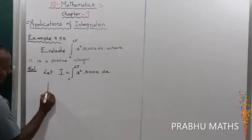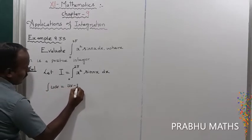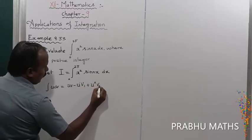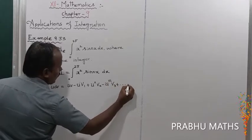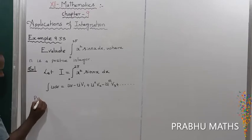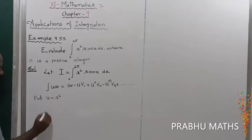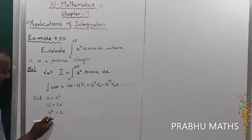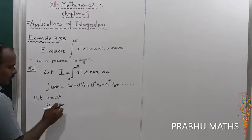By using Bernoulli's formula, we know that ∫U dv = uv − u′v₁ + u″v₂ − u‴v₃ + … and so on. Here, we put u = x², so u′ = 2x, u″ = 2, and u‴ = 0, so the derivatives stop there.